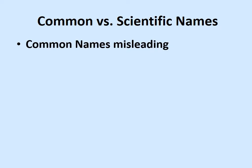Scientific names are basically Latin names. They are given a Latin name because Latin is what we refer to as a dead language. Nobody on the planet, except for scientists, actually speaks Latin. So Latin isn't subject to changing.